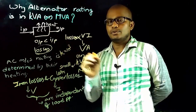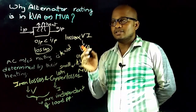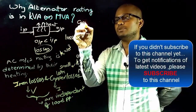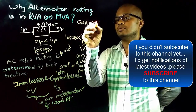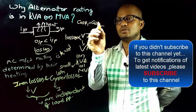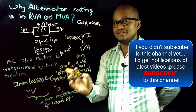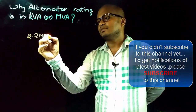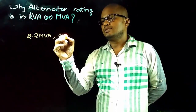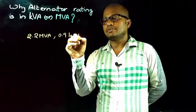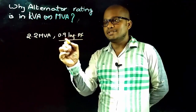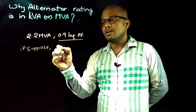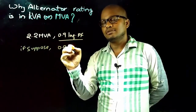From the transformer topic, transformer losses are independent of power factor because input power factor equals output power factor. But the alternator case is different. On the nameplate details of an alternator, it will be specified as, for example, 2.2 MVA at 0.9 power factor, which means that particular alternator is designed to operate at 0.9 power factor at rated load.